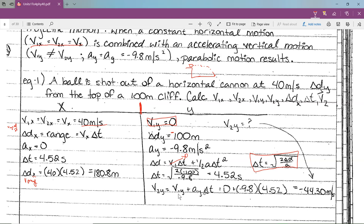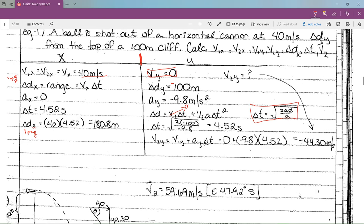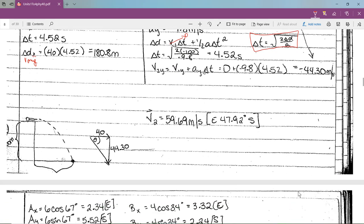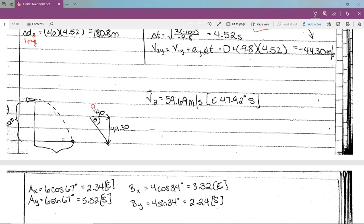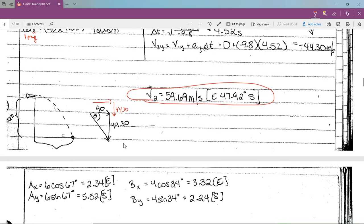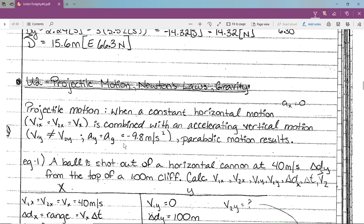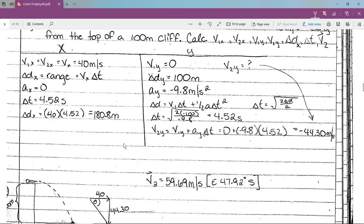If I want the final velocity in the y direction, V2y is V1y plus Ay delta t. V1y is zero, so just negative 9.8 times 4.52, negative 44.3 meters per second. The range is 40 times 4.52, so 180.8 meters. If you do the Pythagorean theorem, you're going to get V2 as 59.6 meters per second east, 47.92 degrees south.